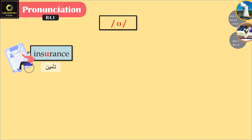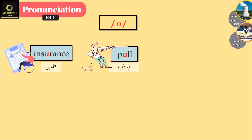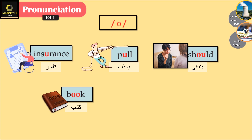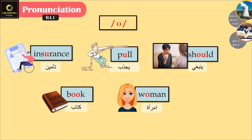Now listen and repeat the next set of words featuring the short /ʊ/ sound: insurance, pull, should, book, woman. Let's listen again: insurance, pull, should, book, woman.